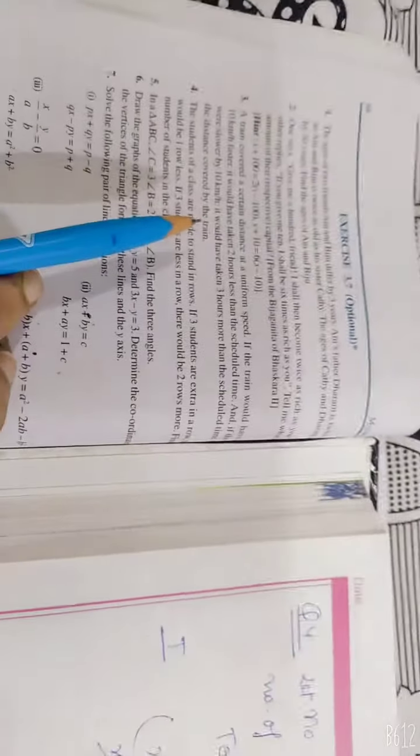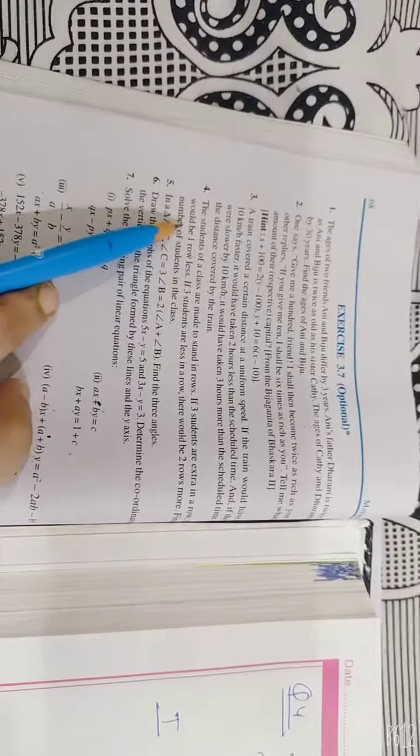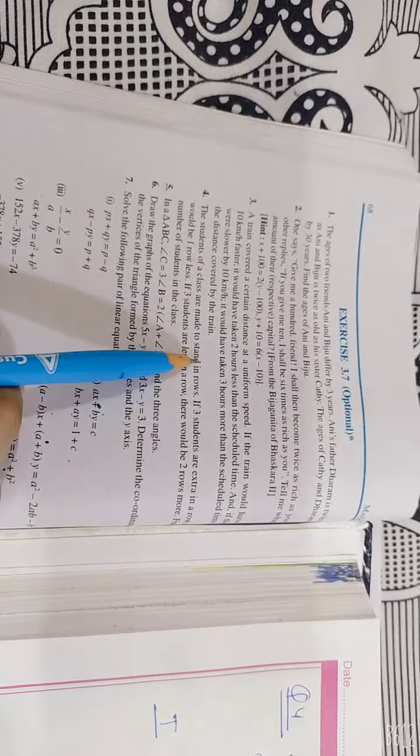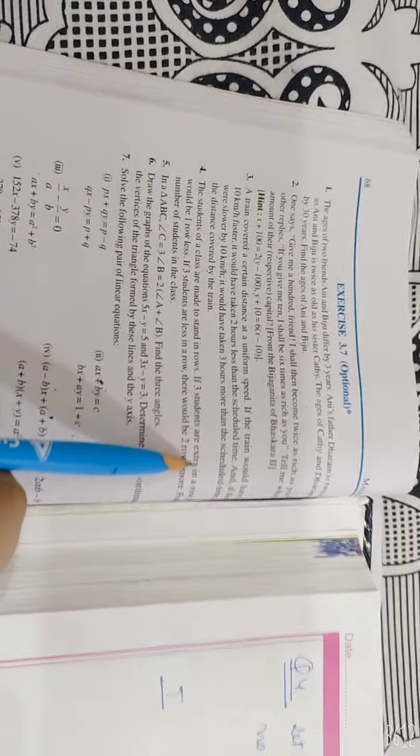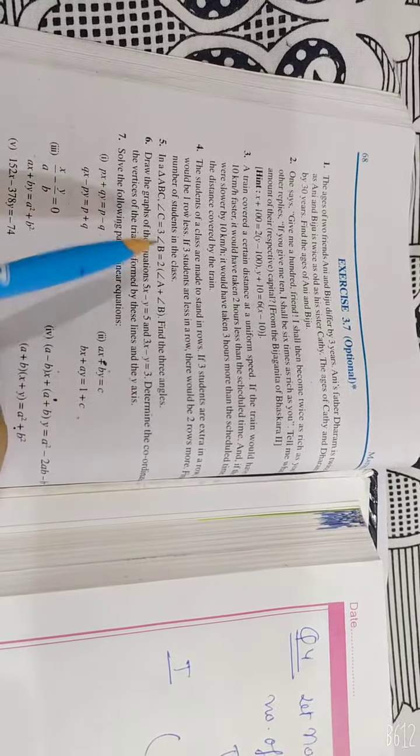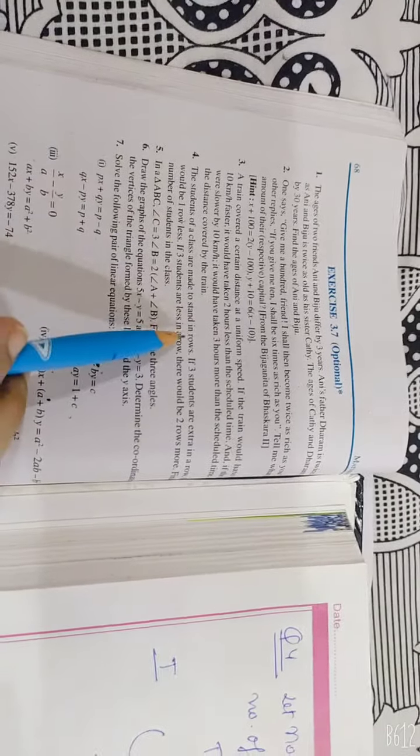Question of exercise 3.7. This is given: Students of the class are made to stand in rows. 3 students are extra in a row, then rows would be less. What was it in a class?